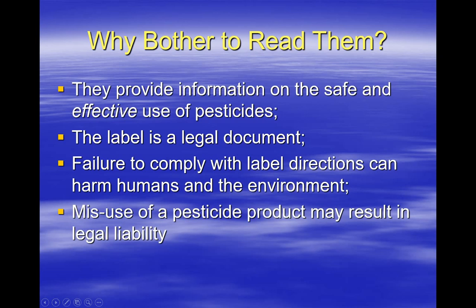Pesticide labels are unique when you look at the universe of chemical products available. If a particular chemical meets the criteria of a pesticide, the product label must meet the standard established by US EPA or is considered to be misbranded. It is important that an applicator reads all the provisions on a label because they provide information on the safe, effective use of a pesticide. It is considered to be a legal document that must be followed.